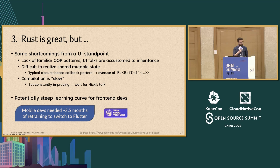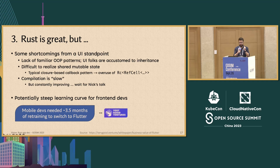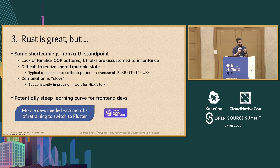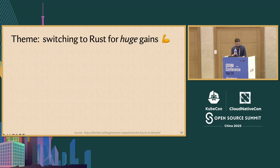One issue that also motivates this further is that Rust is said to have a potentially steep learning curve, which could be even worse from the perspective of a front-end developer encountering Rust for the very first time. There was a survey from a Flutter consultancy called Very Good Ventures that found mobile developers needed over three and a half months of retraining to switch from React Native or a native SDK to Flutter. Rust could potentially be even worse. However, the saving grace is an underlying pervasive theme in the developer community that switching to Rust will bring you huge gains.